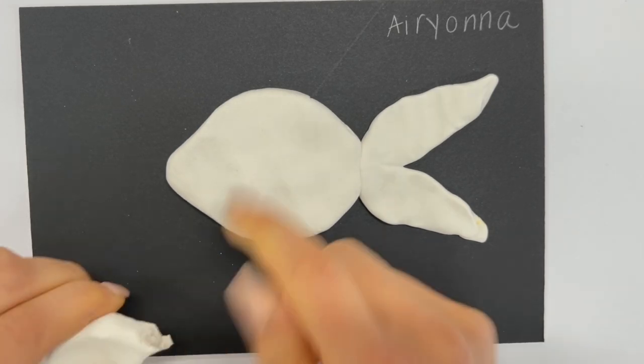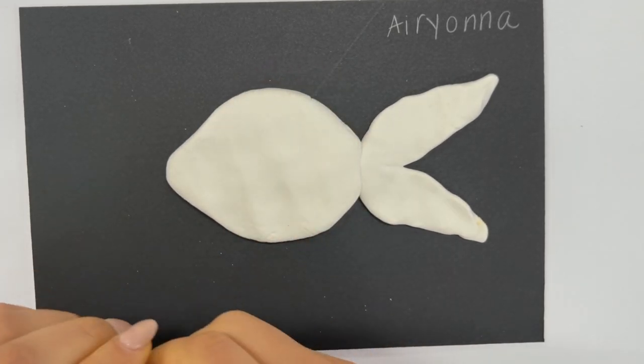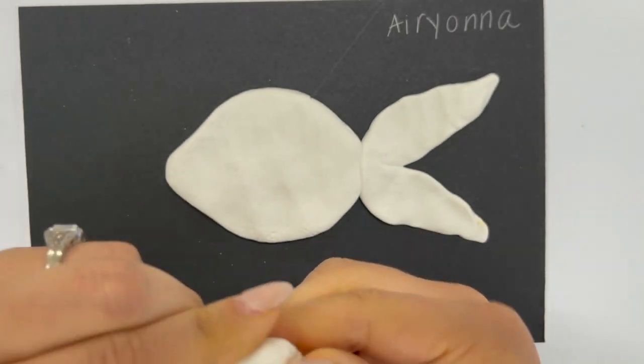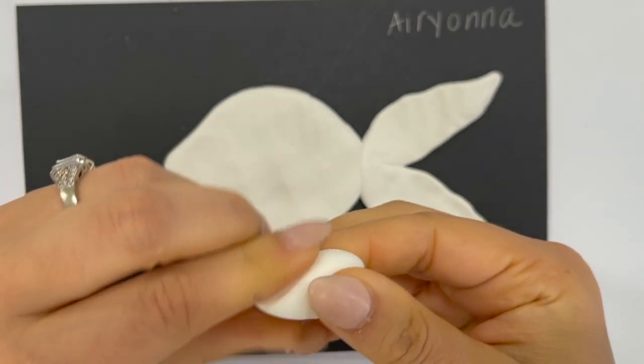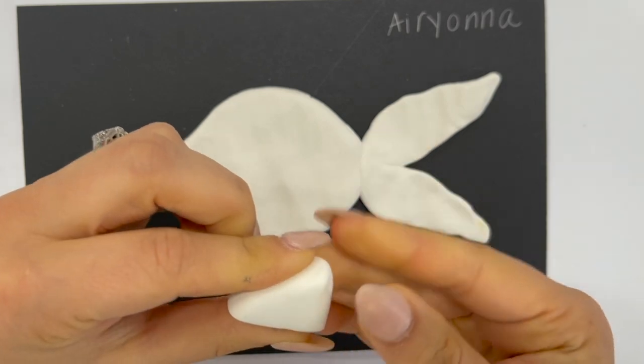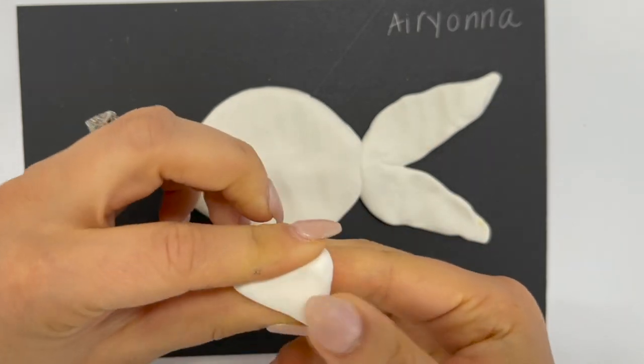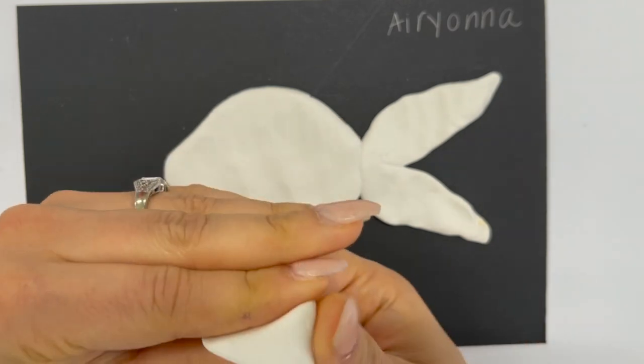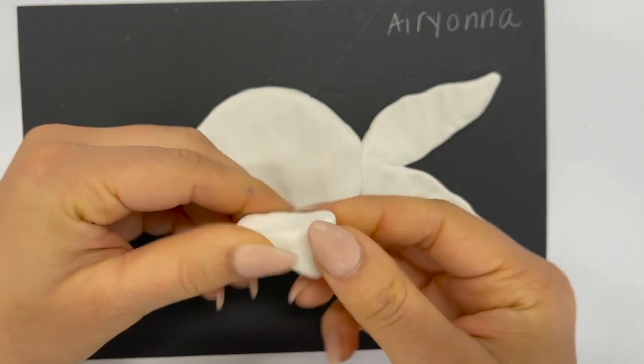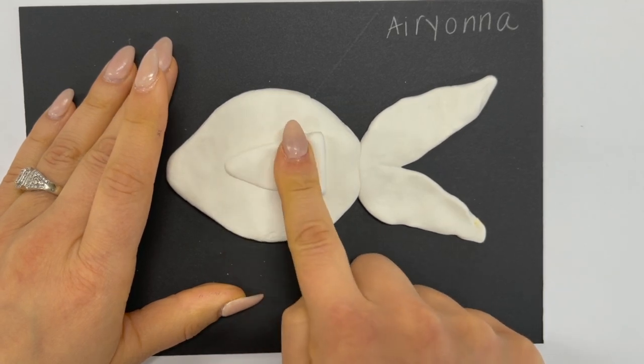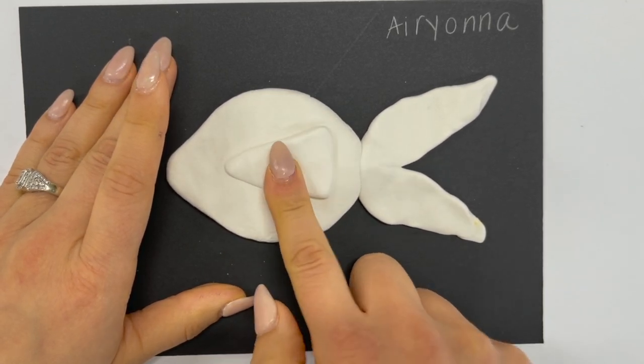Now I'm going to start to build on more details to my fish so I'm going to break off smaller pieces. As I get my details more defined, my pieces of clay get smaller and smaller that I tear off. I'm just going to form a little triangular form here and this is going to be the side fin of my fish. I'm just going to press that down with my finger, smush it down.